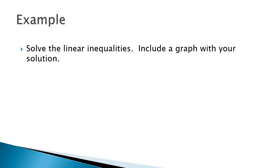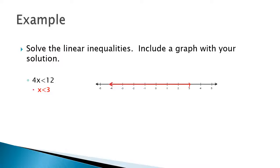Now we're going to solve some linear inequalities, and you want to include a graph with your solution — you will be asked to do this on both tests and quizzes. Try 4x is less than 12. Dividing both sides by 4, you get x is less than 3. Then we draw a number line with that answer on it. Notice a slight difference in how we're drawing the number line now — we're using either a parenthesis or a squared-off bracket instead of open or closed circles. It matches the set notation. We have an open parenthesis on the 3 and the arrow pointing to the left.